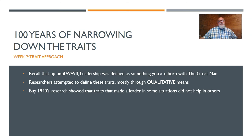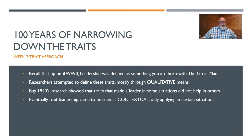By the 1940s, research was showing that the traits that made a leader in some situations didn't always help in others. We were starting to realize that maybe trait theory is not airtight. There are still many aspects of it that are useful even today, but it started to show some of the chinks in the armor — where it maybe was not quite the catch-all theory people thought it was.